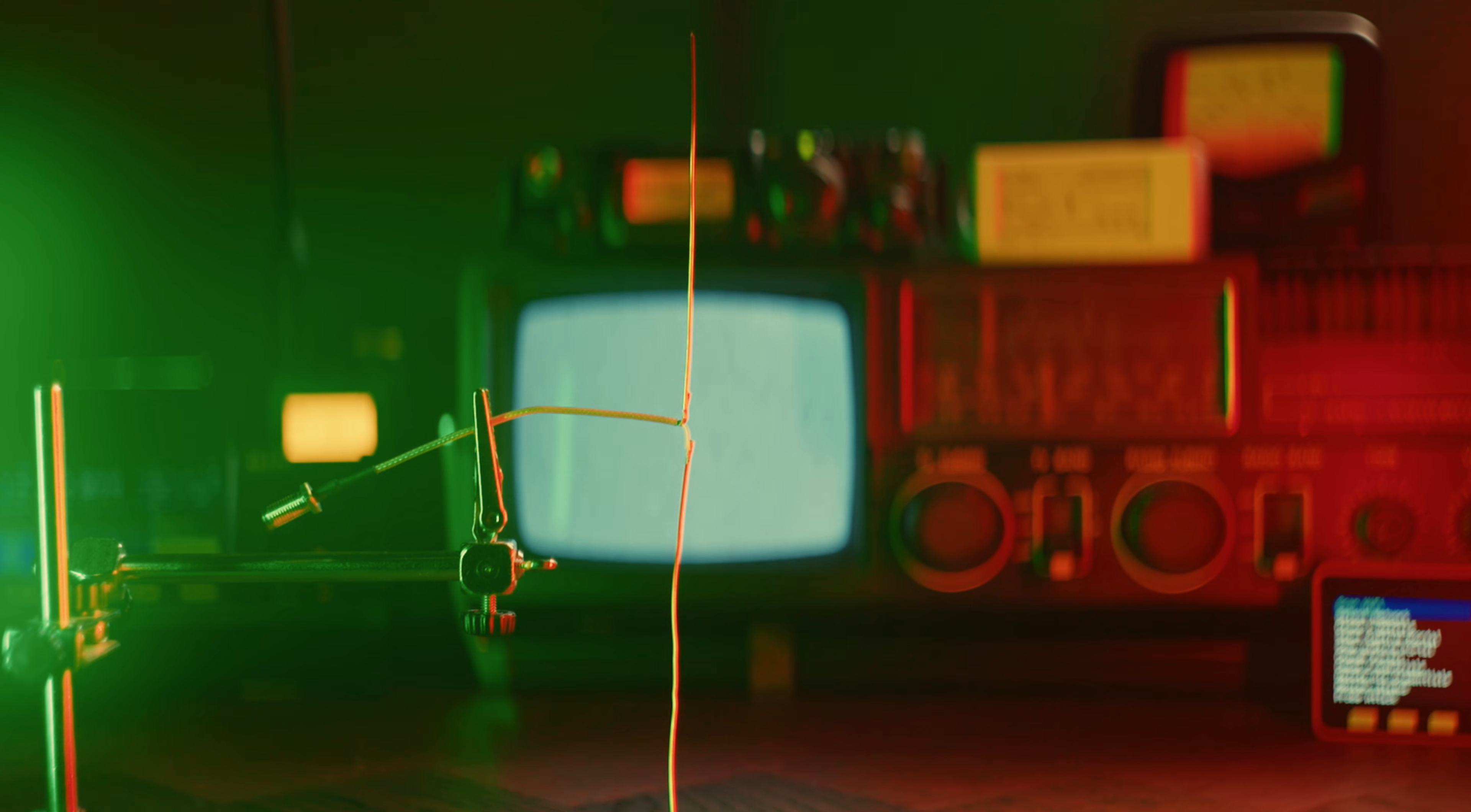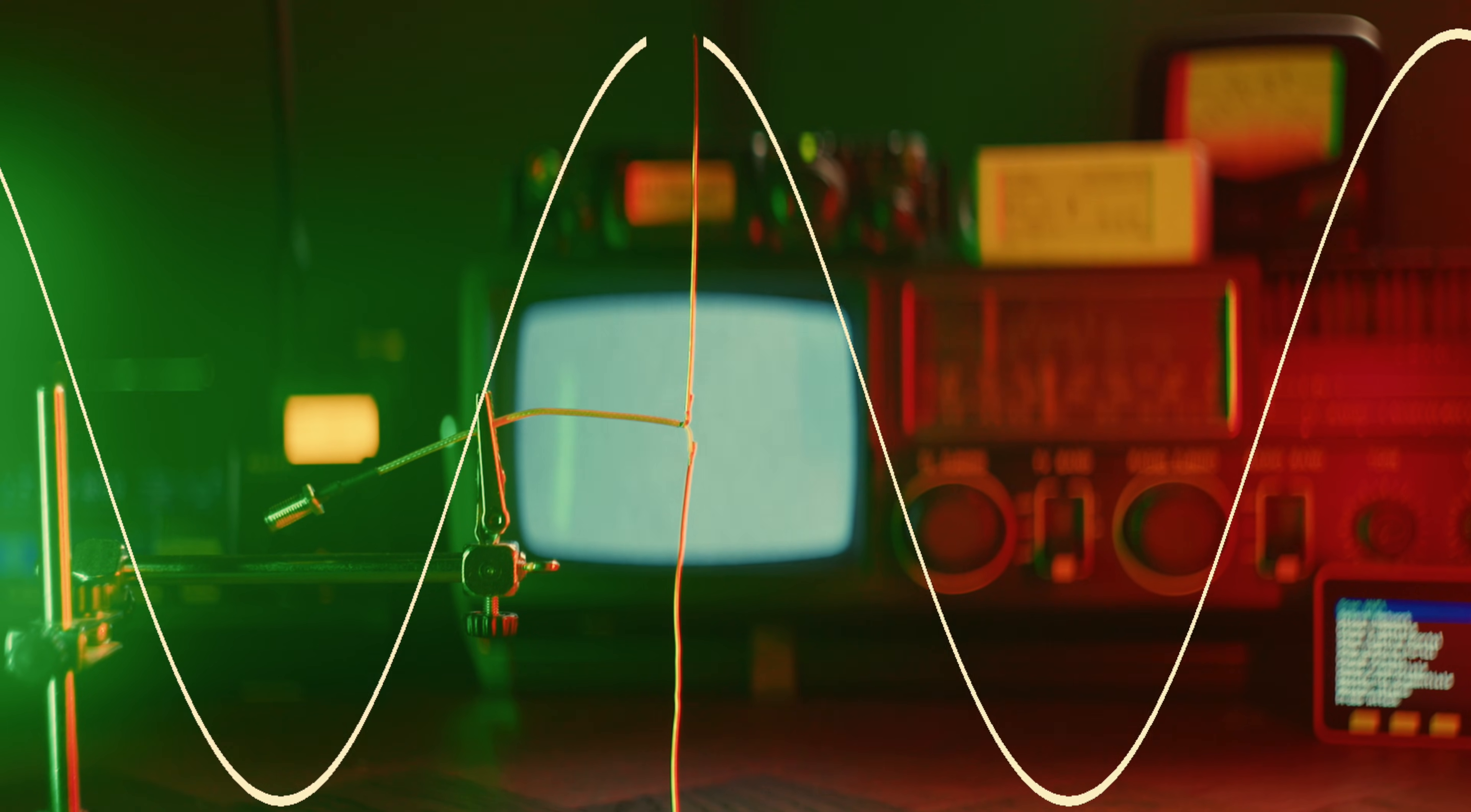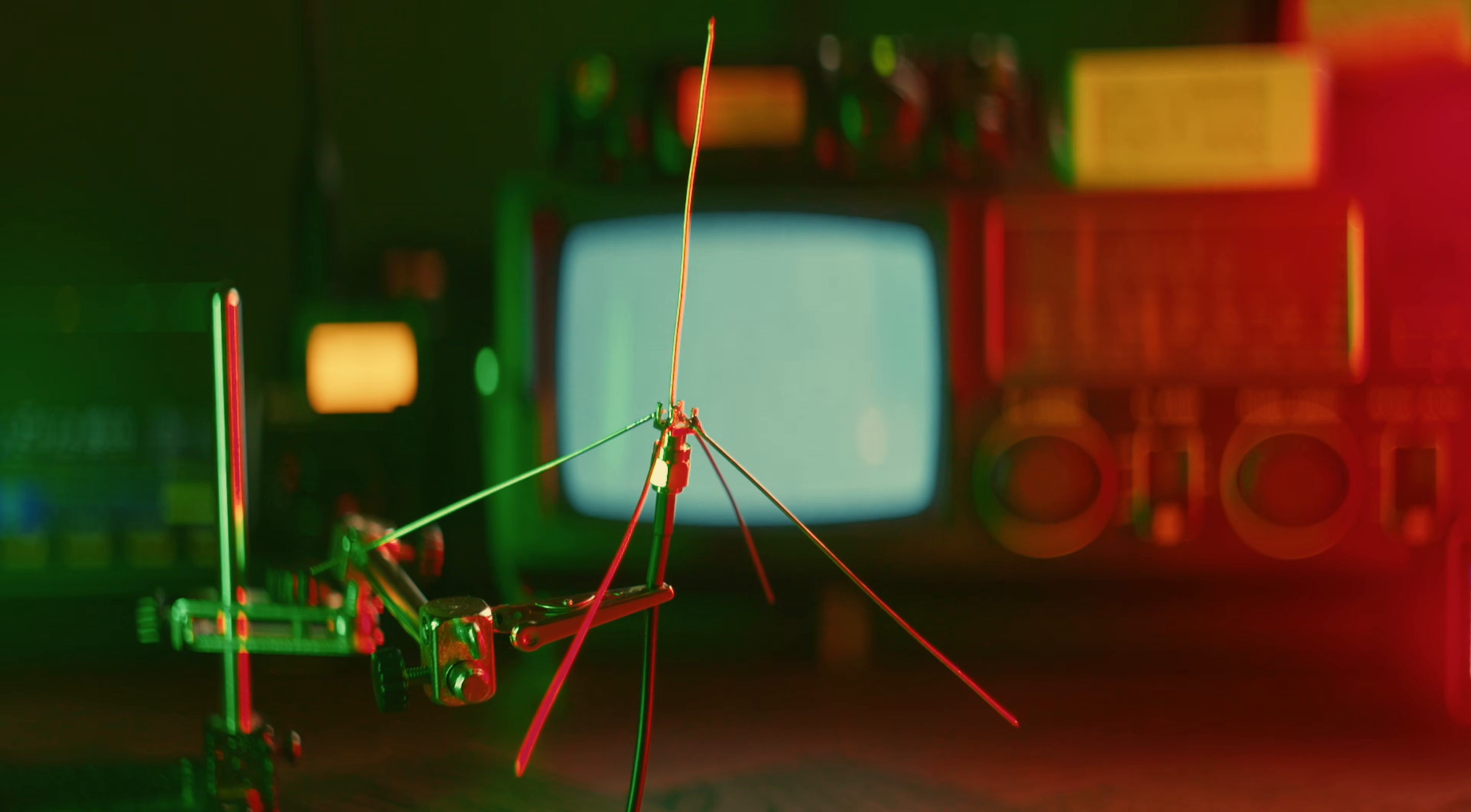First we need to understand that radio transmissions happen as a wave with a real physical size. This is called wavelength. You can do a rough calculation of a specific wavelength by dividing 300 with the frequency in megahertz and get the result in meters. So if we wanted to know the wavelength of 433 megahertz, we do 300 divided by 433, and the result is about 70 centimeters.